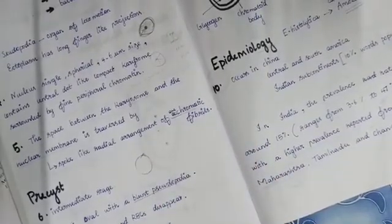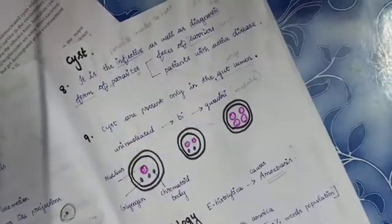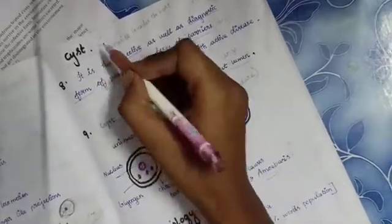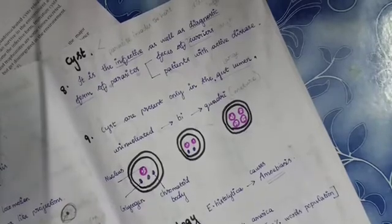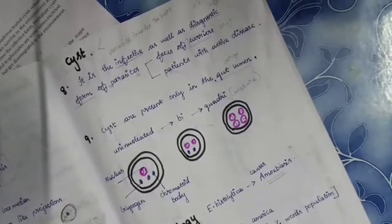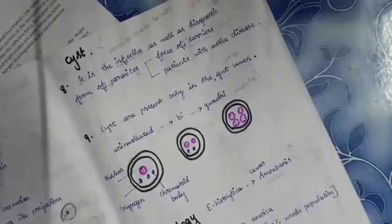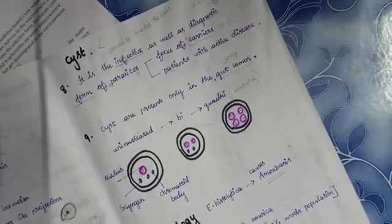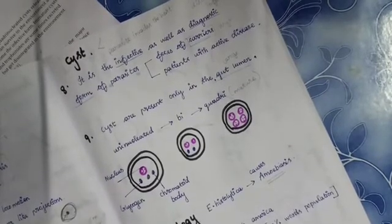And the third stage is cyst stage. It is the infective and diagnostic stage of parasite. Again it has two terms: infective and diagnostic form. Infective means it is ready to infect another host, so it is called as an infective form. Why it is considered as diagnostic form? Means we cannot see trophozoid or pre-cyst in the stool of the patients. Only the presence of cyst, we can diagnose the patient who is suffering from this disease or not.